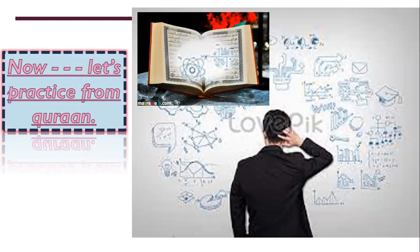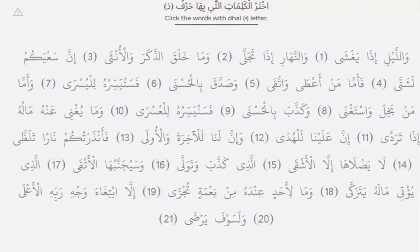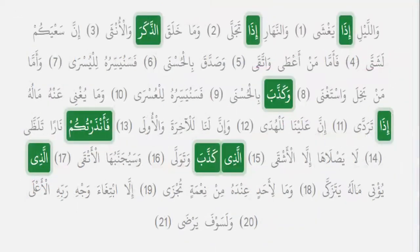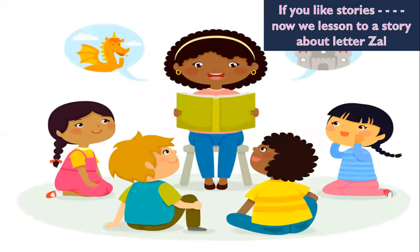Now let's practice from the Quran. Please try to find the words with letter Zal from Surah Al-A'la. The first word is: Iza. Az-zakara. Wa-kaz-zaba. Iza. Fa-an-zartukum. Al-ladhi. Kaz-zaba. Al-ladhi. These words contain letter Zal from Surah Al-A'la. If you like stories, now we will listen to a story about letter Zal.